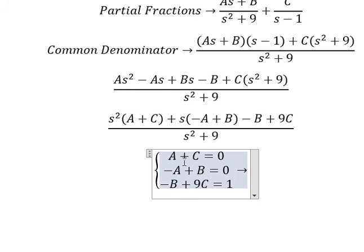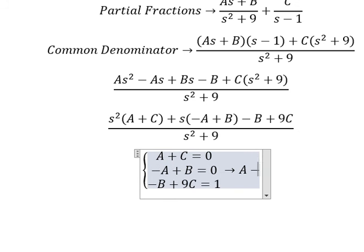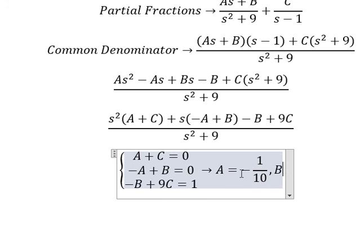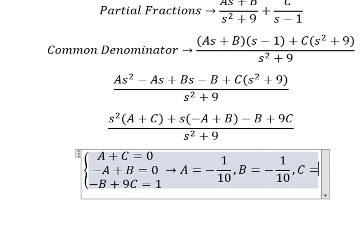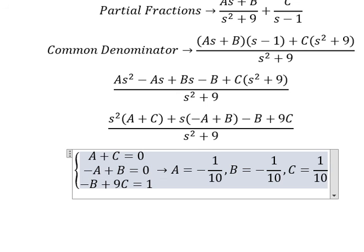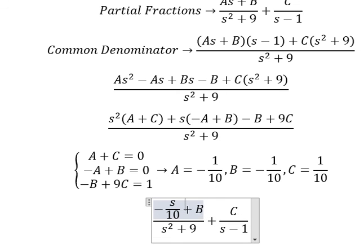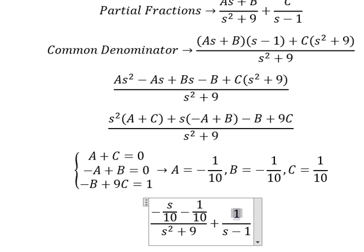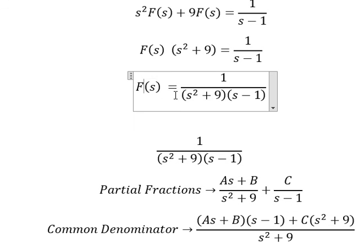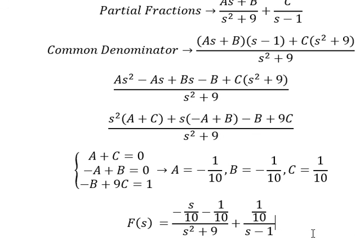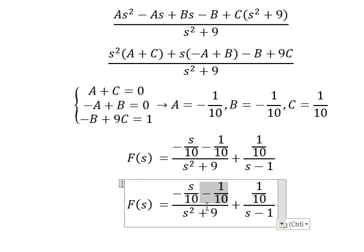Now we need to find the solutions of A, B, C. So A equals to negative 1 over 10, and C equals to negative 2 over 10. Now I will put A, B, C in here. This one we can put into separate terms.